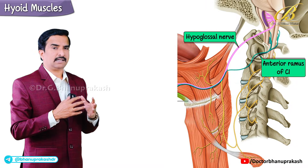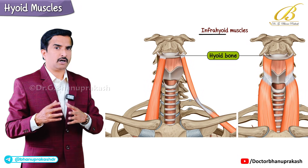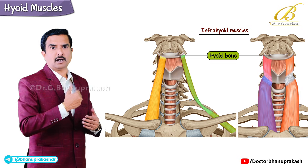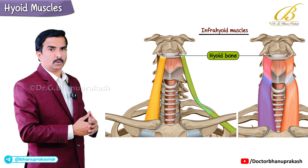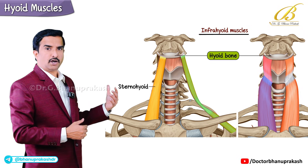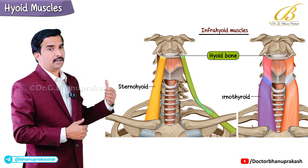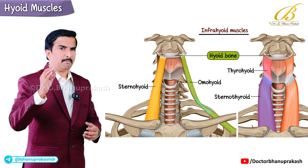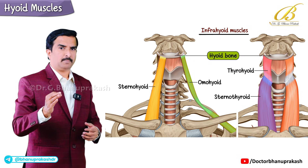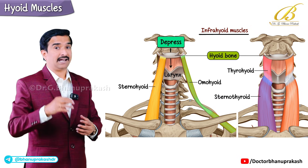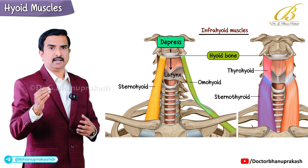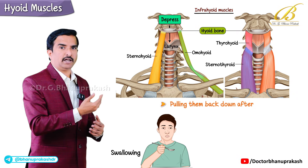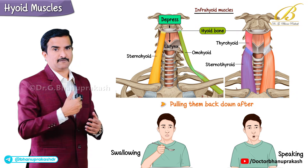Now let's look at the infrahyoid muscles. These are located below the hyoid bone and they include sternohyoid, sternothyroid, thyrohyoid, and omohyoid. Their main job is to depress the hyoid bone and the larynx — basically pulling them back down after swallowing or speaking.